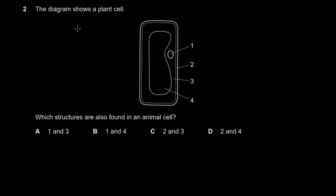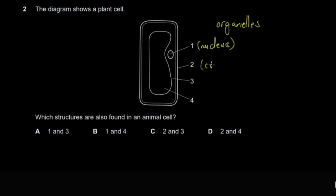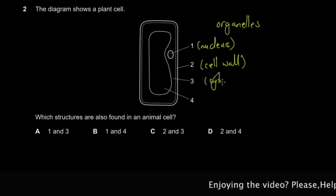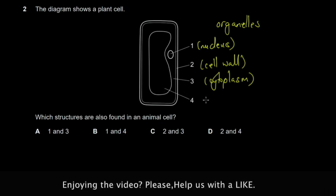Question two shows a diagram of a plant cell. The structures inside a plant cell are called organelles. You are asked which structures are also found in an animal cell. It helps to label what's shown: this one is the nucleus, this one is the cell wall, this one is the cytoplasm, and this one is the vacuole.